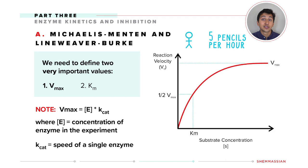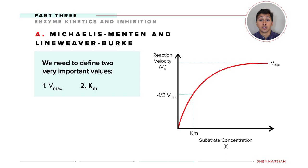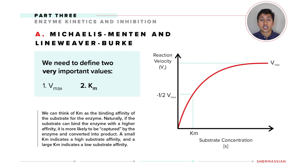Km is the second important term you'll need to know. We can think of Km as the binding affinity of the substrate for an enzyme. Naturally, if the substrate can bind to the enzyme with a higher affinity, it's more likely to be captured by the enzyme and converted into a product. A small Km indicates a high substrate affinity, and a large Km indicates a low substrate affinity.